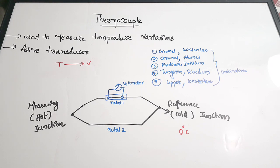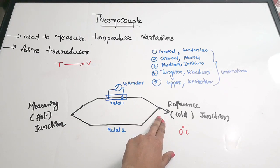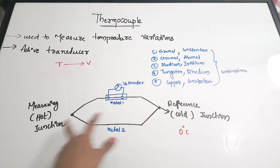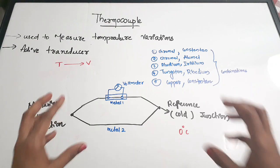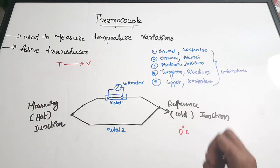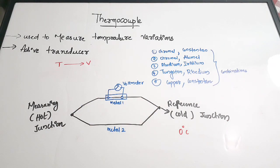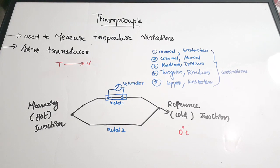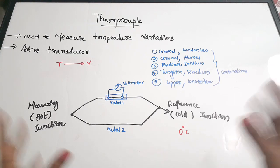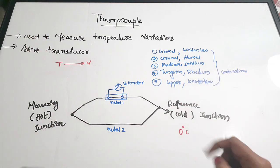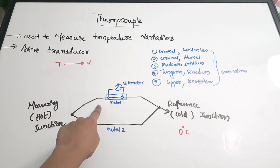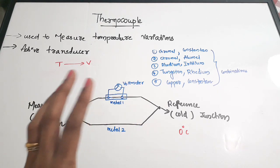When a temperature source is connected to the hot junction and the cold junction is kept at 0 degrees, there is a temperature difference, and due to this temperature difference EMF is generated at the two junctions. The net value of the EMF in the circuit is measured with the voltmeter. So when two dissimilar metals form two junctions kept at different temperatures, EMF is generated, and the net EMF is measured — that is the sum total of the working of a thermocouple.